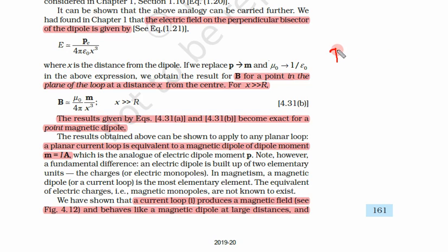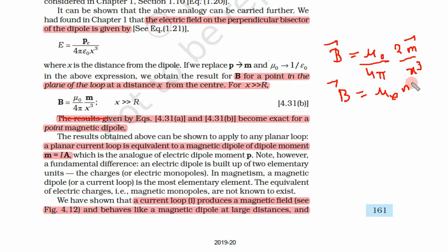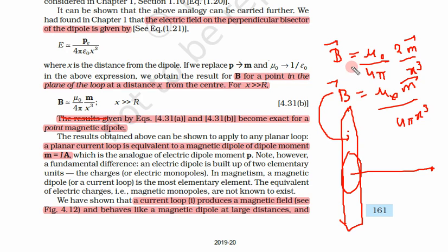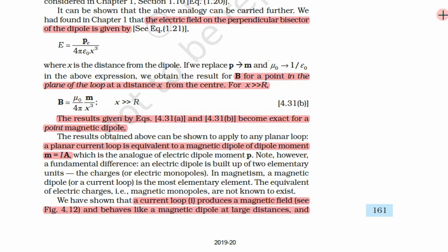We have two expressions: B is equal to mu naught upon 4 pi times 2m upon x cube (vector quantities), and B is equal to mu naught m upon 4 pi x cube. These are two cases — the first case is when the point is on the axis of the loop, and the second case is when the point is in the plane of the loop (the plane case).